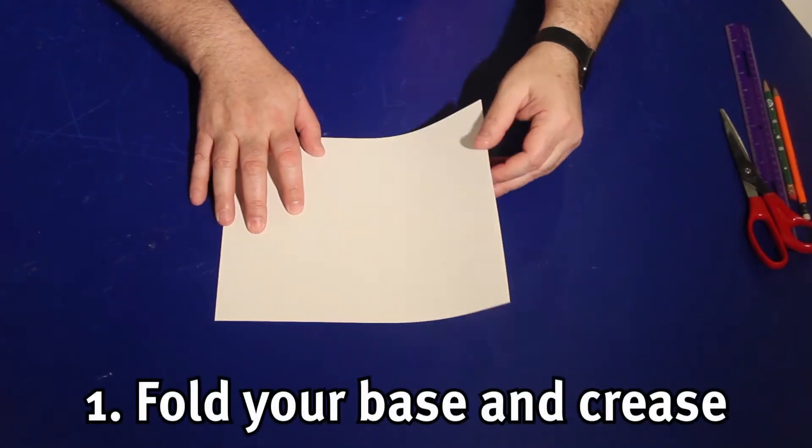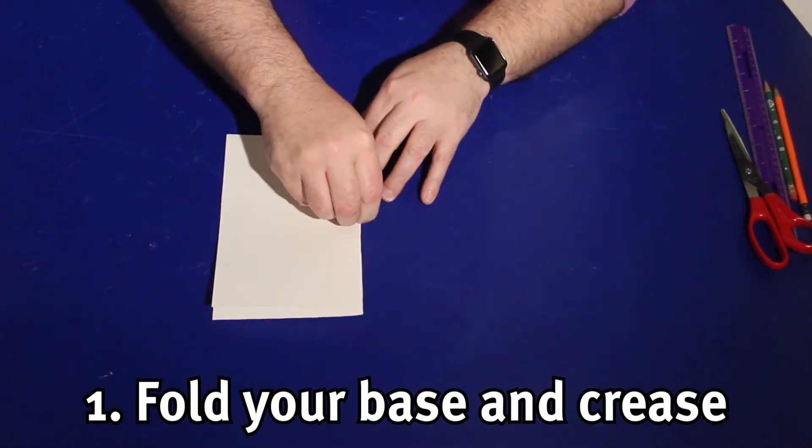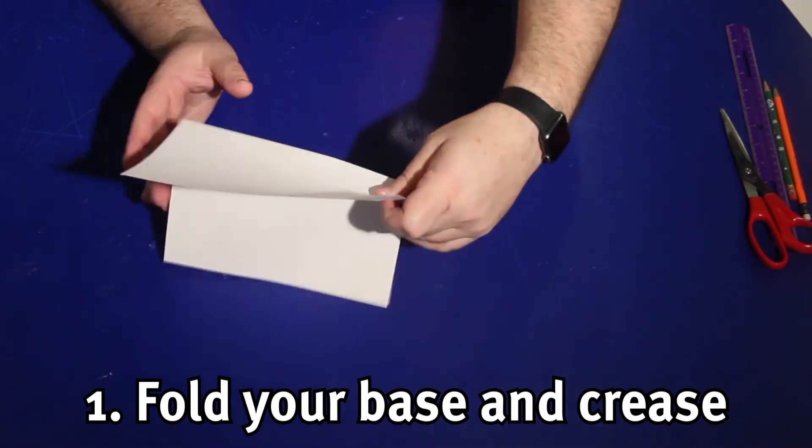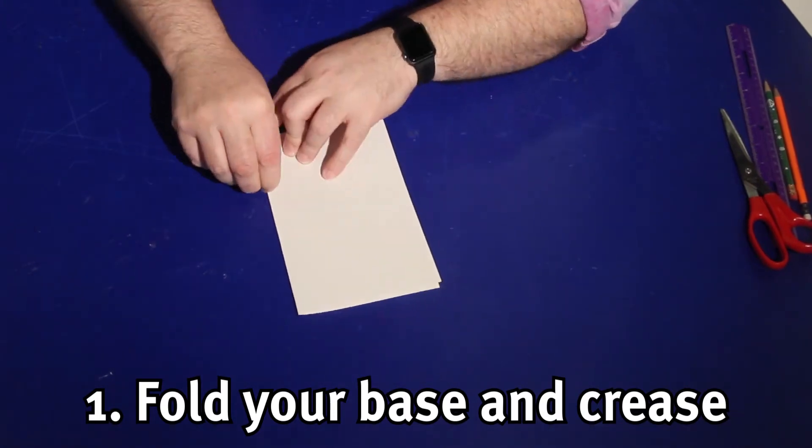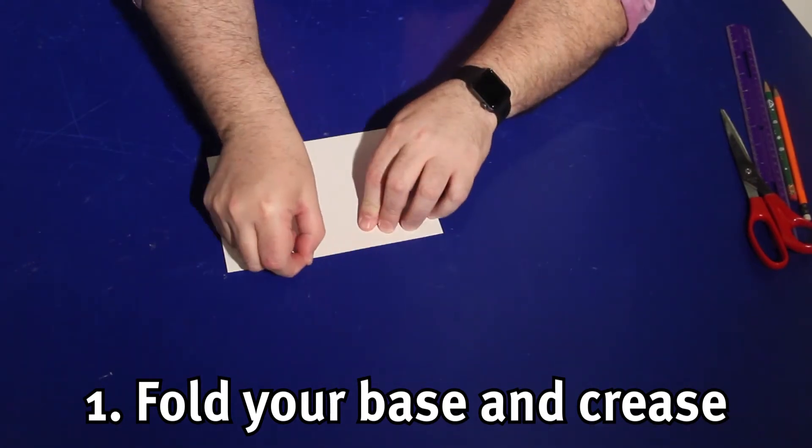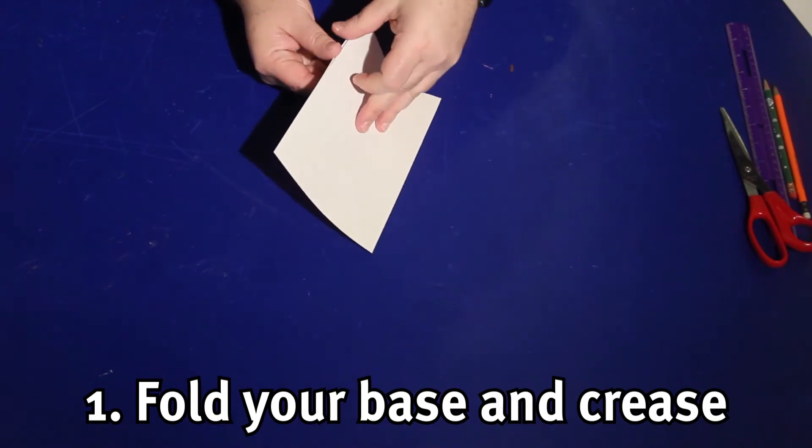The first thing to get started is folding a base. Take a piece of cardstock and fold it in half. You really need to crease this well. In fact, one of the most important things in paper engineering is to crease any folds well by going back and forth a few times.